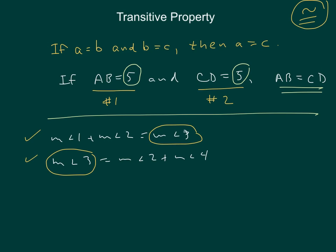Therefore, we can say that measure of angle 1 plus measure of angle 2 equals measure of angle 2 plus measure of angle 4.